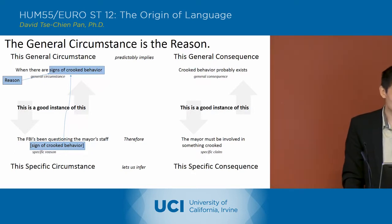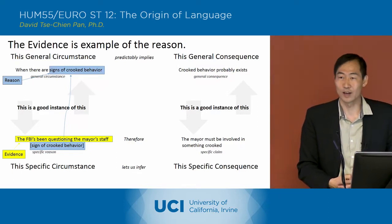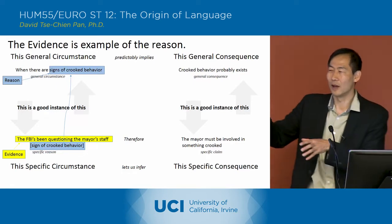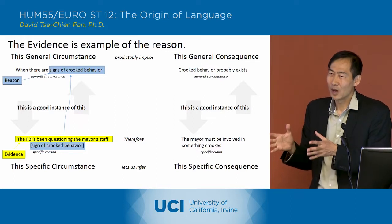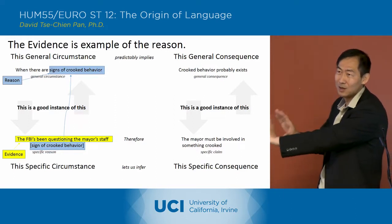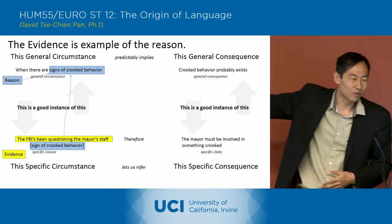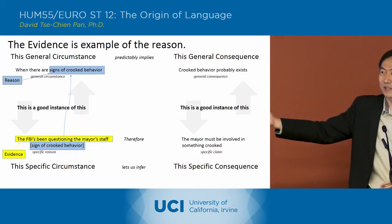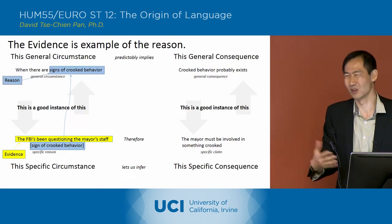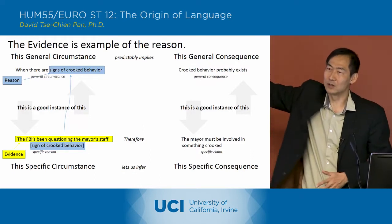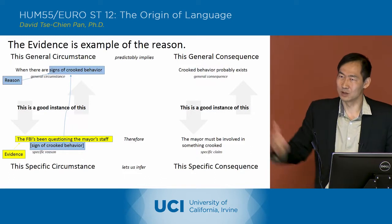That's the way they've linked it up — it's the reason. The evidence, here in the specific case, is the FBI questioning the staff, because that's the sign of the crooked behavior. This is similar to what we had with Hobbes, where we had the specific triangle — a building with the shape of a triangle — and on top, the general triangle, any triangle. Here we've also got the specific situation of the FBI questioning the mayor's staff as an example of the general situation, a sign of crooked behavior. The evidence can be seen as an example of that reason.